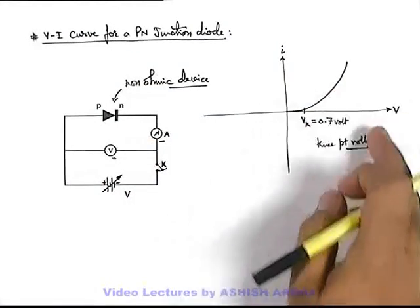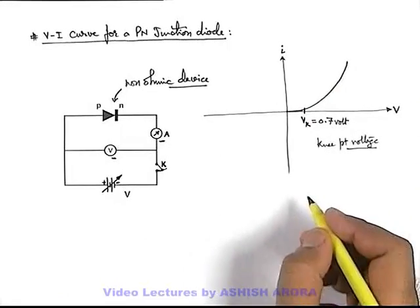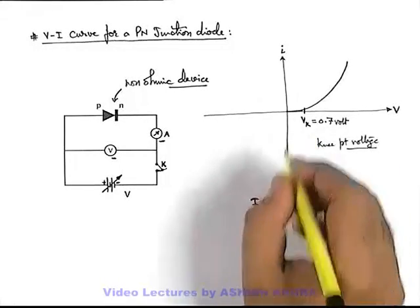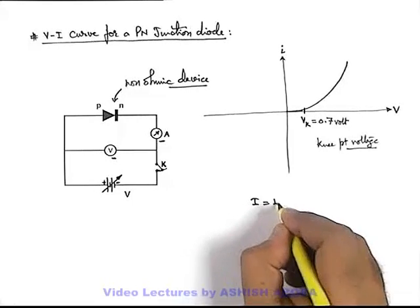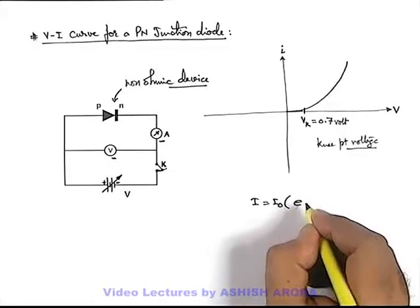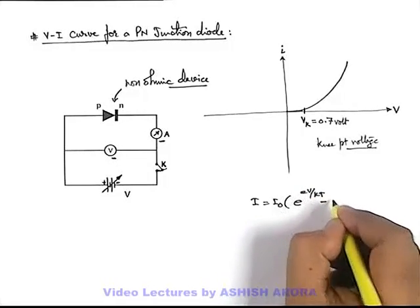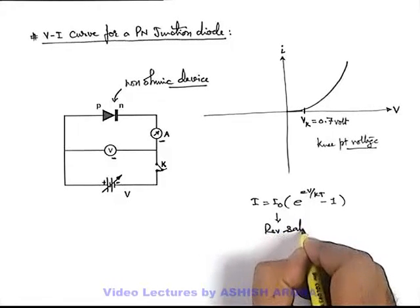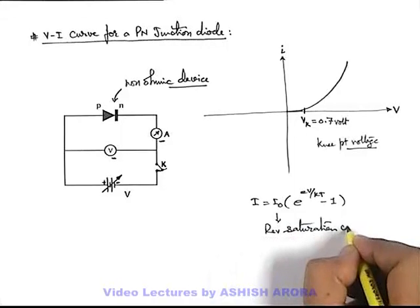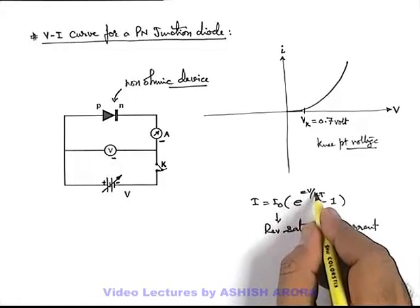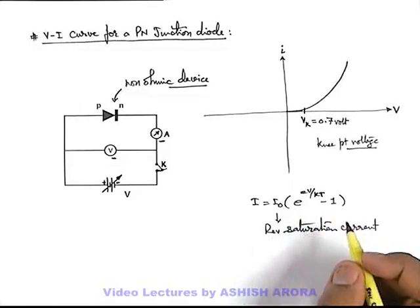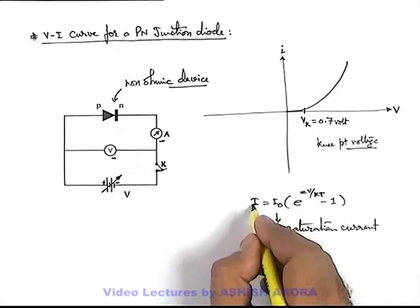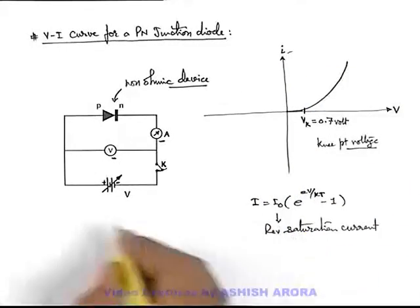The variation of current with voltage follows a law which is beyond the scope of our lectures, but the expression is: variation of current is given by I₀(e^(eV/kT) - 1), where I₀ is called reverse saturation current, V is the applied voltage, k is the Boltzmann constant, and T is the temperature of the PN junction in thermal equilibrium. This is the current which we are plotting here.